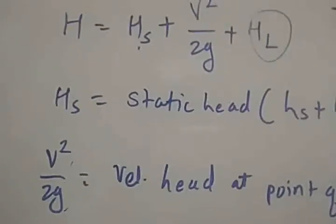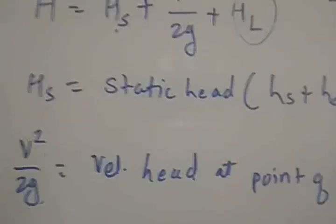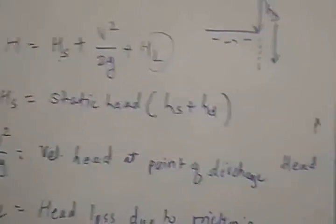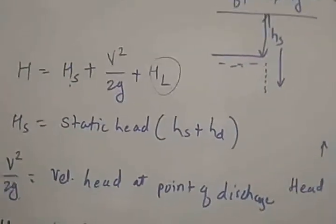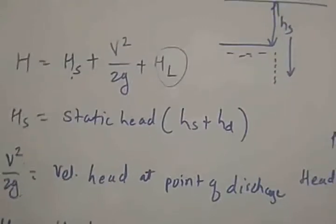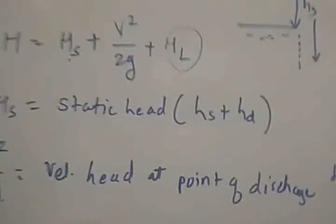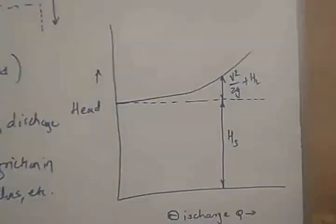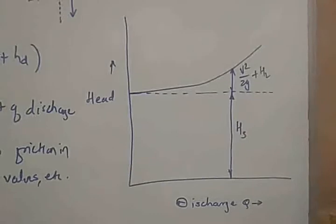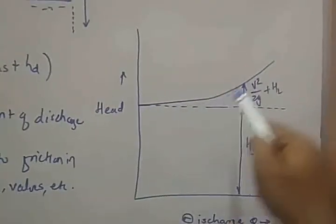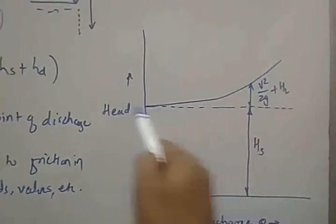Thus, the total head varies with varying flow rate and discharge. Either the flow rate will change or the discharge will change, the total head will vary. Hence, the plot of total head of pumping versus flow rate is known as the system head curve, which I have drawn over here. The plot of total head versus discharge is known as the system head curve.